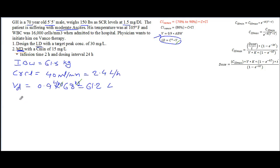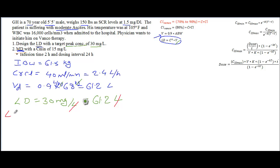Now the next thing is the concentration at time zero — the peak concentration target. The peak concentration we need is 30 mg per liter. So 30 mg per liter times the volume of distribution of 61.2 liters — liters cancel — giving us a loading dose of approximately 1832 mg. Since the drug is available in 500 mg and 1000 mg, we round up to 1837 milligrams.